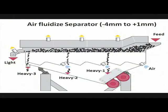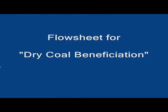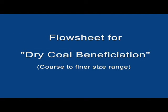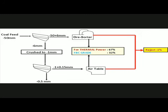Here we see the products of separation. NML has procured an air-fluidized-bed air separator which operates in a higher size range. A flow sheet for dry coal beneficiation covering coarser to finer size has been developed. In the flow sheet, we can see only 1% has been sent to reject.